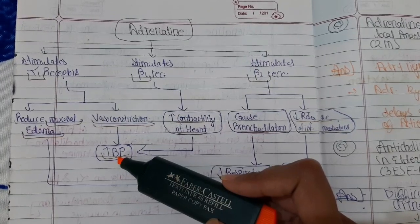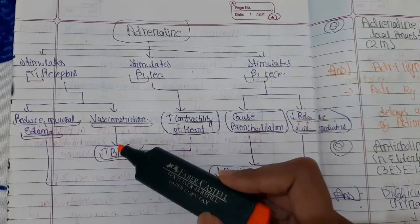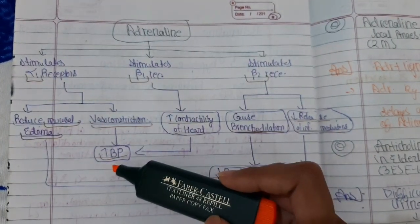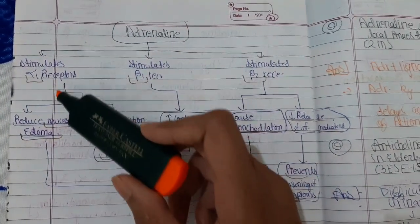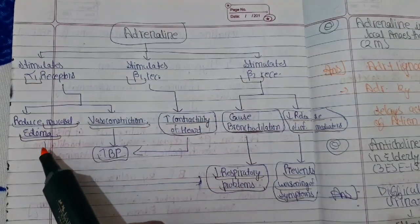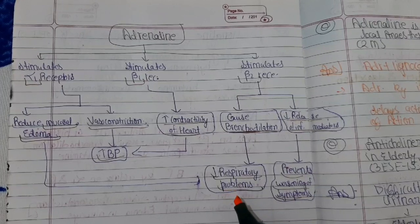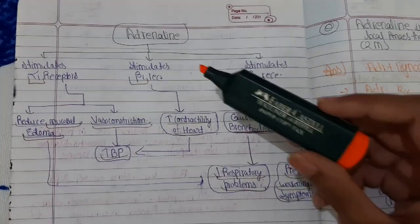blood pressure is very low. By causing vasoconstriction through alpha-1 receptors, adrenaline increases BP. By stimulating alpha-1 receptors, it also reduces nasal mucosa edema, which leads to decreased respiratory problems.